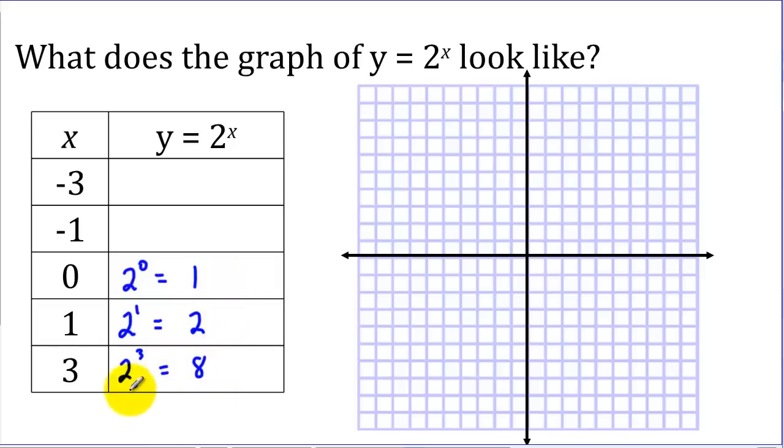So you can see as we're increasing our x values, every time x goes up 1 with this function, our y value will be doubling. So it will be increasing quite rapidly. Let's look at what happens when we go into the negative.